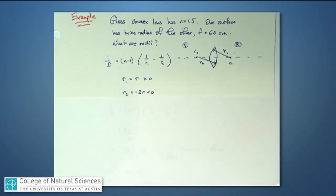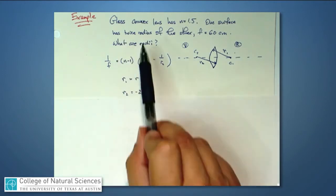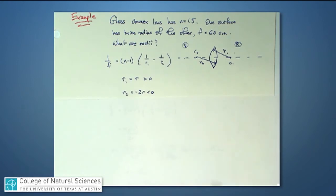r2 is twice as big because it says it has twice the radius of the other, but I must put in that it's a negative number. So I'm putting r2 is minus two times whatever that number r is, and that's less than zero.